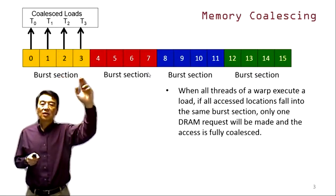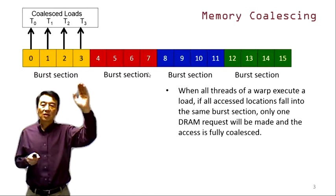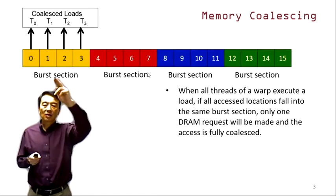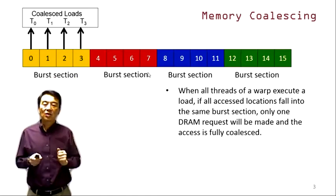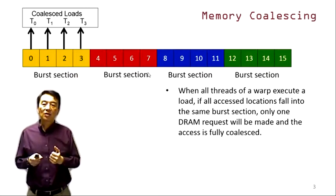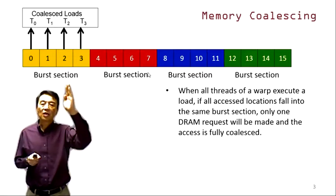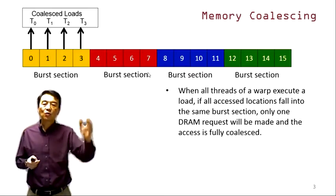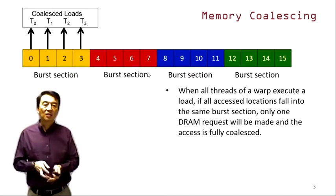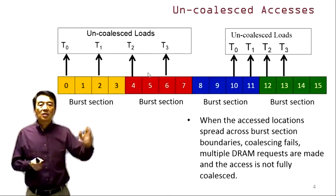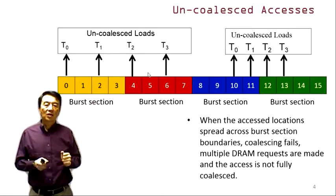Thread zero through thread three — if all the data they access together fits into one burst section, only one request to the DRAM system needs to be made and all the bytes will be returned from DRAM to the processor. We say this access is fully coalesced because the requests have been combined into one DRAM request.